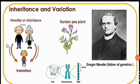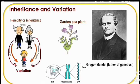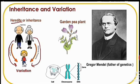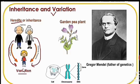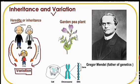Today we are going to study inheritance and variations. In the last year we studied heredity and inheritance, which are the main features of life. Inheritance means that some characters are transferred from parents to offspring, and some changes occur in their offspring — this is called variation. For example, the color of hair can be different in offspring, which is a variation.